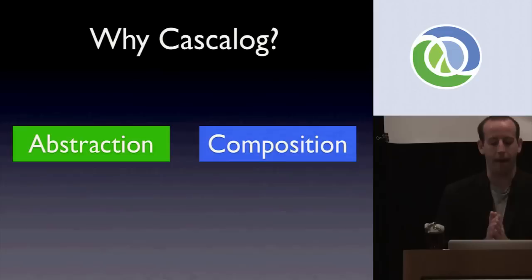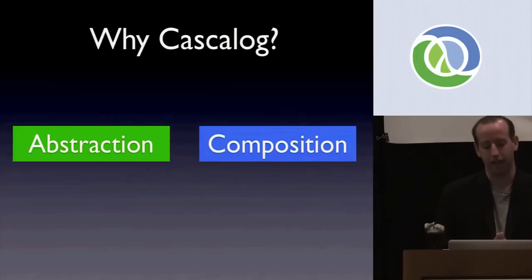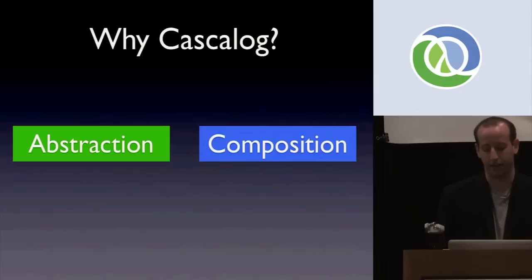What Cascalog distinguishes itself with is giving you awesome ability to apply abstraction and composition techniques to your data processing. As it turns out, data processing and data querying is programming, so you need these techniques just like you do with any other code — to manage complexity. I find this is a point that's often lost in the database and data processing community, and this is going to be the major theme of this talk.